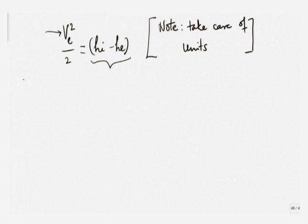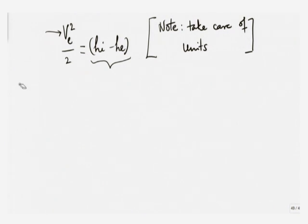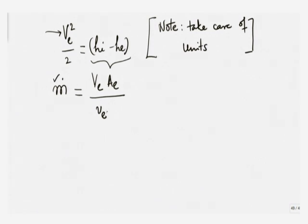Now part A also requires exit area. We have been given m-dot which we have not yet used: m-dot equals Ve · Ae divided by specific volume at exit. M-dot is given, Ve has been calculated, specific volume at exit can be found from the steam tables for 10 bar 0.9 dry. So Ae can be determined. Note: capital V is velocity, small v is specific volume — be careful with notation.